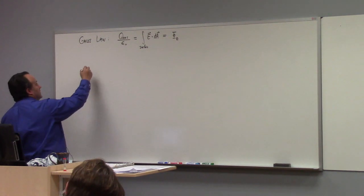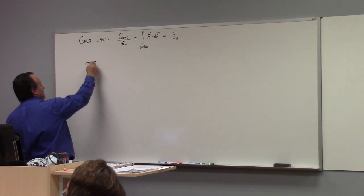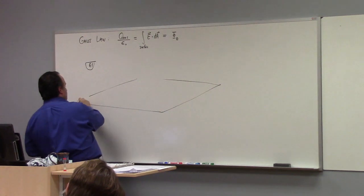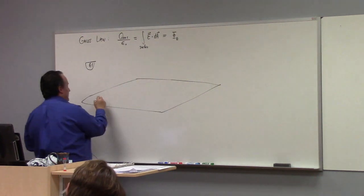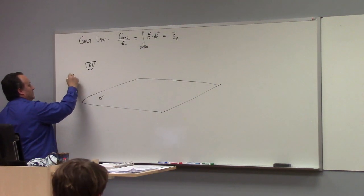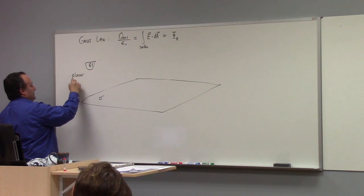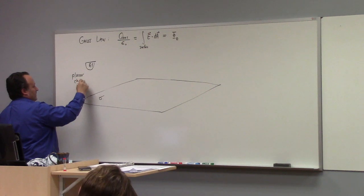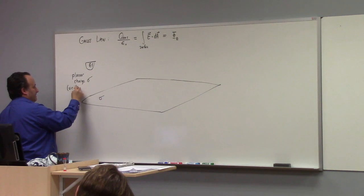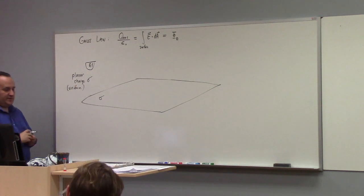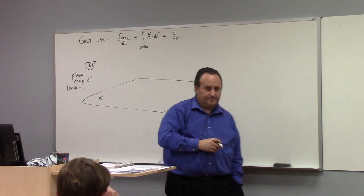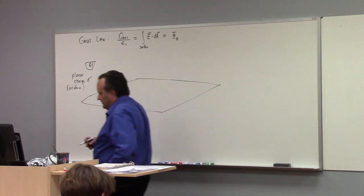Example one for us today: suppose we have a plane with a planar charge sigma. So this is a uniform charge per unit area sigma over some plane. The question then is: what's the electric field?